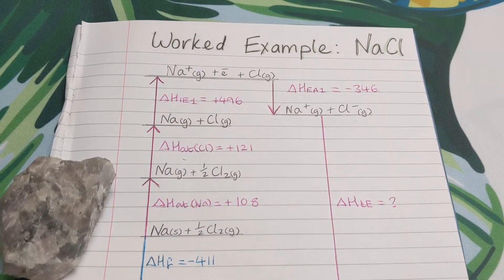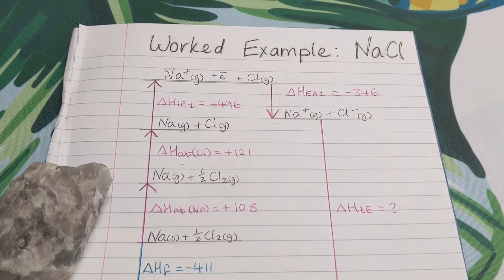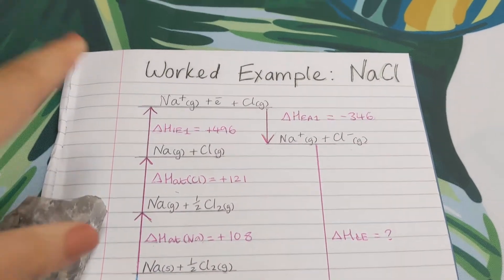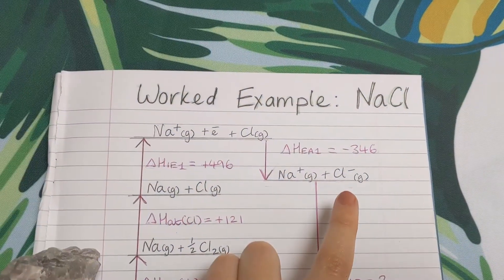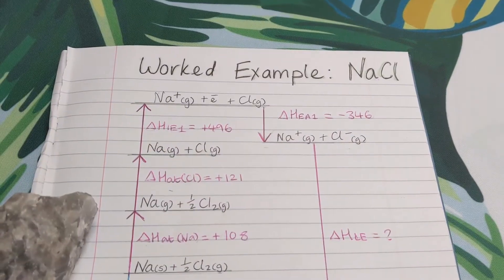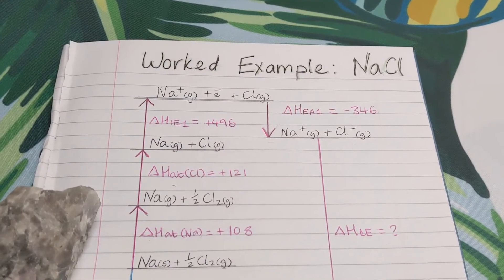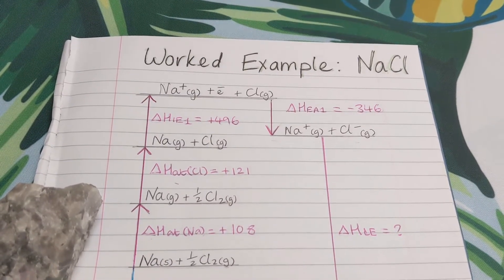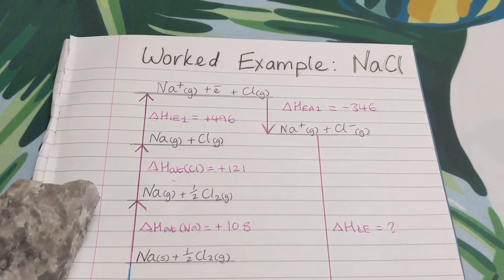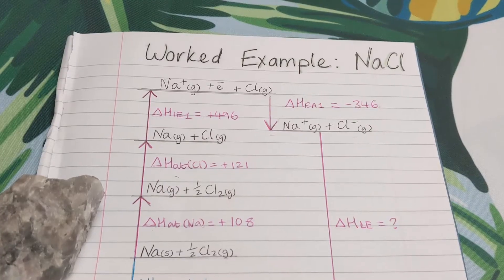So what I mean by that is, this is the simplest form of cycle because sodium forms a 1 plus ion and the chlorine forms a 1 minus ion. So it's got less amount of steps compared to other compounds like magnesium chloride where you've got a 2 plus metal ion, or calcium oxide where you've got a 2 plus and a 2 minus.